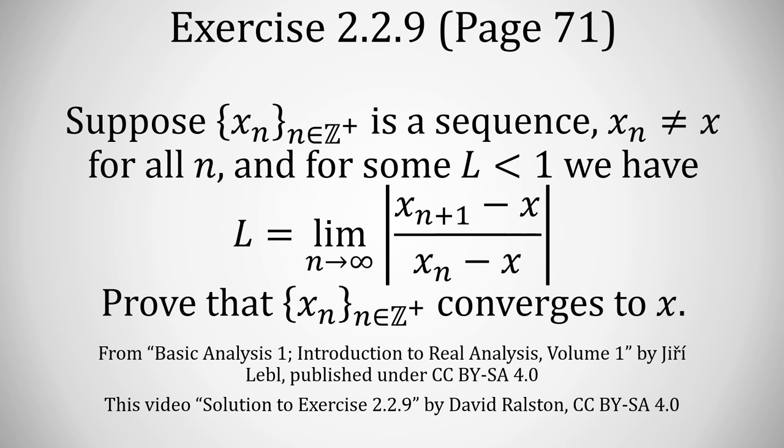Show that the original sequence converges to x. So what we're given is not just that the limit of this absolute value of ratio exists, but it is a limit which is less than 1. And I've picked this example not because it's extraordinarily difficult, but because there's a very subtle error that is very commonly made, and I just want to point it out.